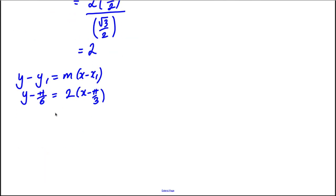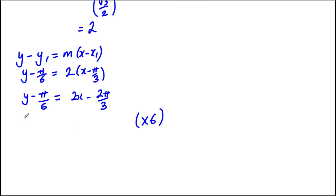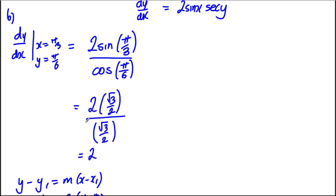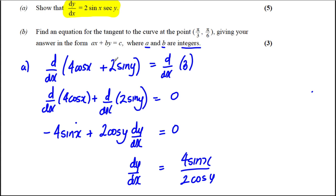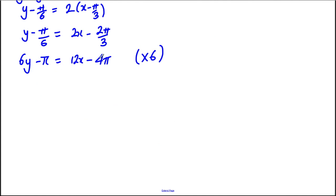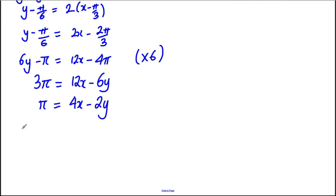Multiplying everything out, we have y minus π/6 = 2x minus 2π/3. Since we want integers, let's multiply everything by 6: 6y minus π = 12x minus 4π. Rearranging — subtract 6y from both sides and add 4π — we get 3π = 12x minus 6y. Dividing through by 3 gives π = 4x minus 2y, or written as ax + by = c: 4x minus 2y = π.